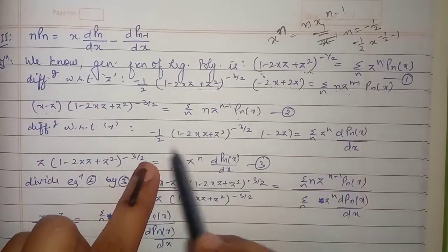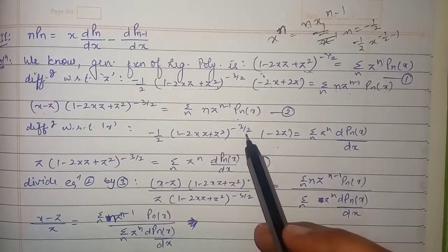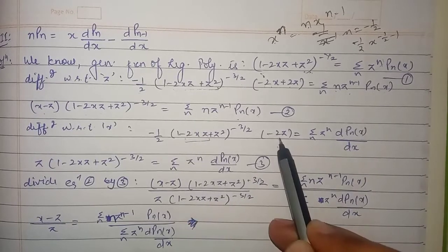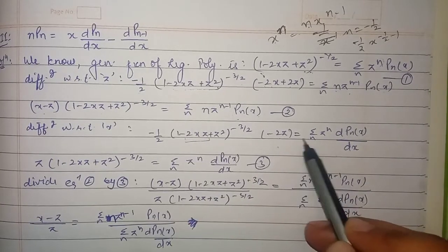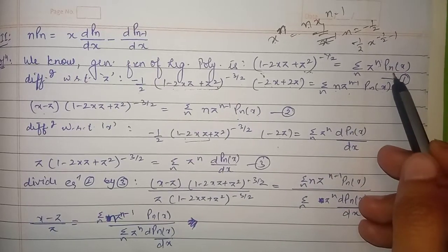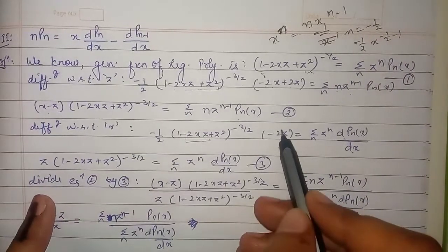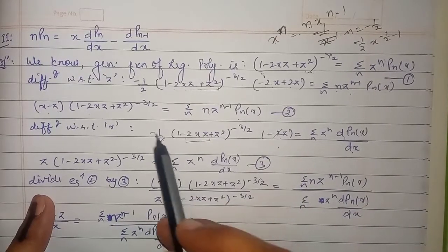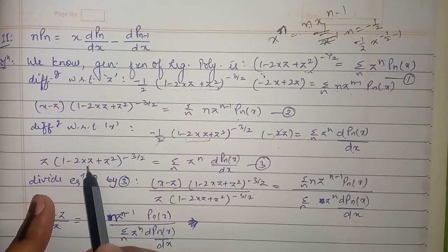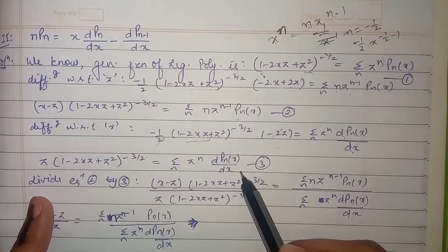Now we differentiate equation 1 with respect to x. We get (-1/2)(1 - 2xz + z²)^(-3/2)·(-2z) = Σ z^n · P'n(x). The 2's and the negatives cancel, giving equation 3: z·(1 - 2xz + z²)^(-3/2) = Σ z^n · P'n(x).